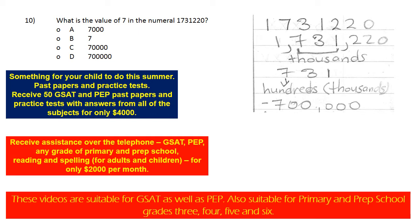Put a comma in front of the 7 and in front of the first 2. So the second set of numbers is 7, 3, 1. There are no more sets of 3s, so what we have here is 1 | 7, 3, 1 | 2, 2, 0.